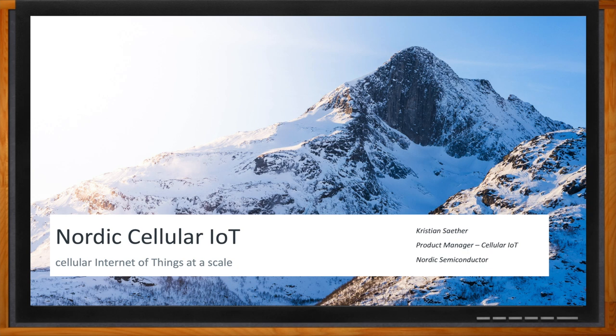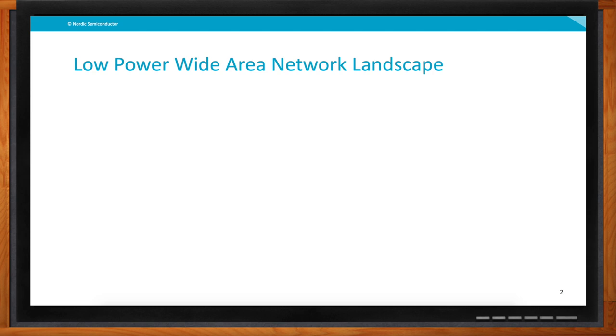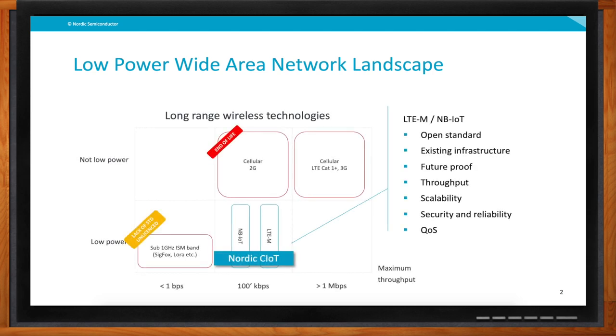Hi Christian, thank you for joining me. We're talking about cellular internet designs today. Before we go further, can you set the stage - what does the overall wireless networking arena look like? Wide area networks are complex for a lot of people. The best way to start is to think about your cell phone, which is cellular connected using technology referred to as 3G, 4G, or in the future 5G - designed for very high bandwidth, not very low power.